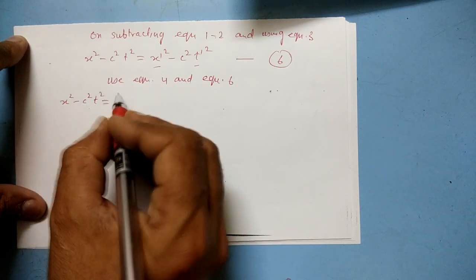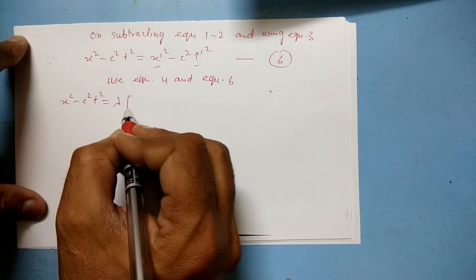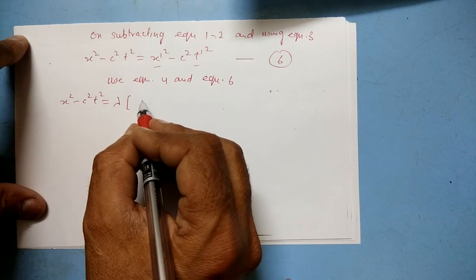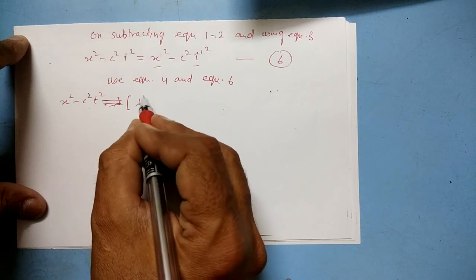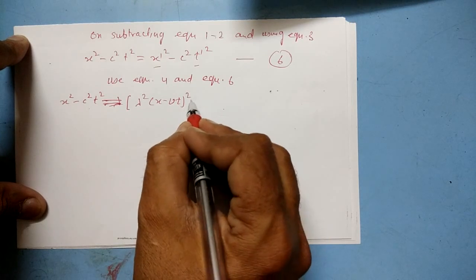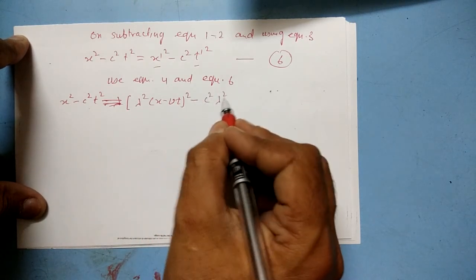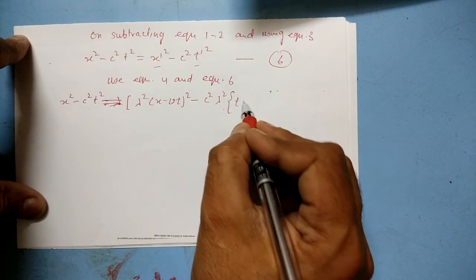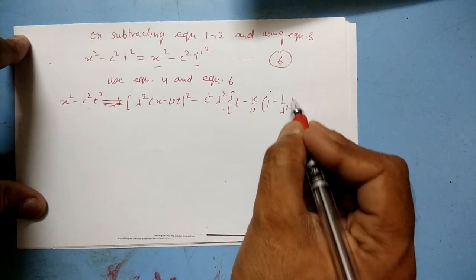We get x² - c²t² equals λ² times (x - vt)² minus c² times (t - xv/c²)² times 1 over λ².